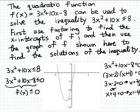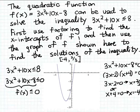So the two x-intercepts of the function f are x equals negative 4 and x equals 2 thirds, which we can confirm from the graph. The solution set to the original inequality is the interval from negative 4 to positive 2 thirds, including both endpoints. Any number chosen from this interval, including negative 4 and 2 thirds, will be a solution to the original inequality 3x squared plus 10x less than or equal to 8.